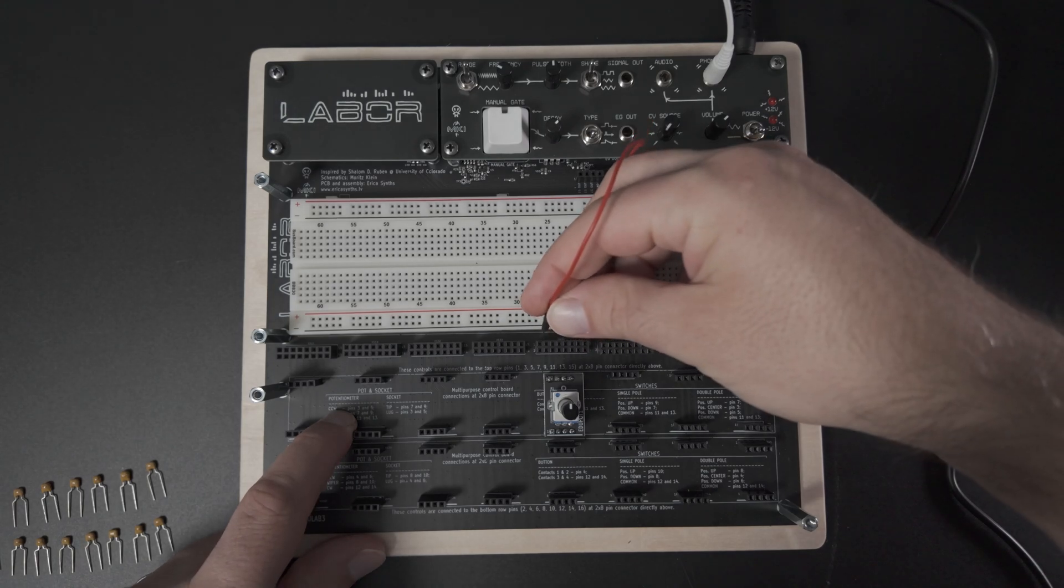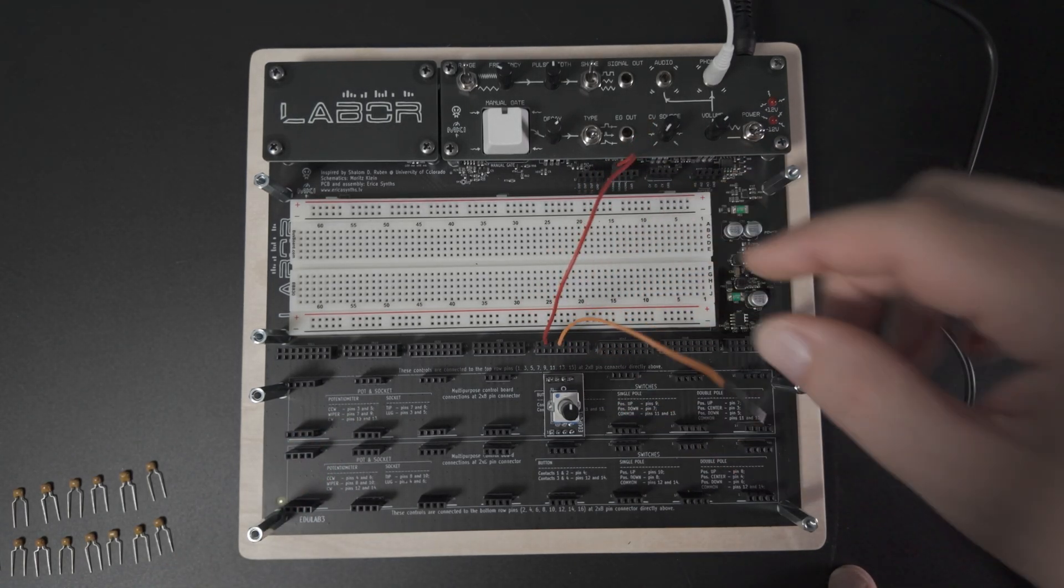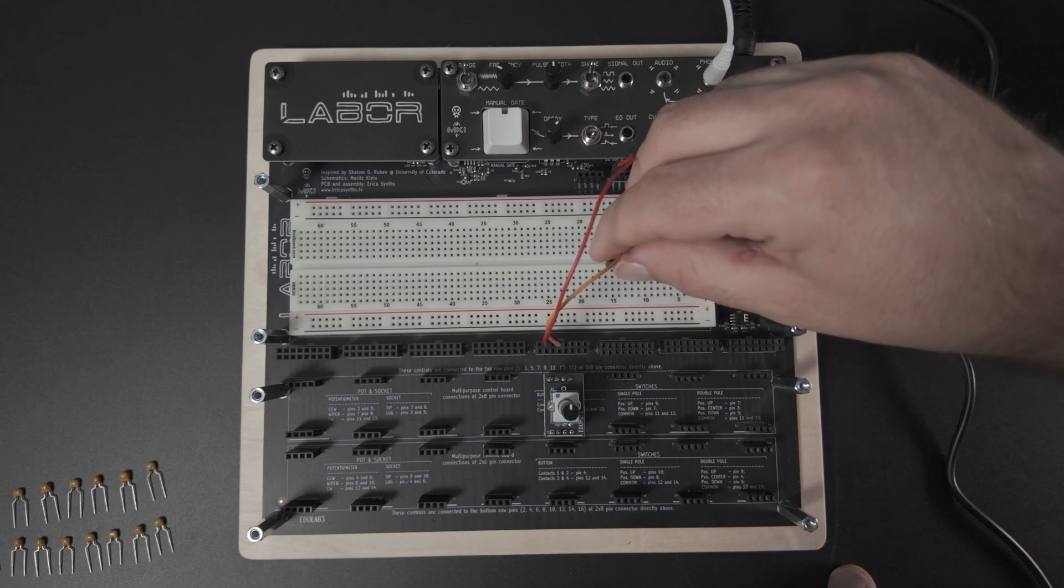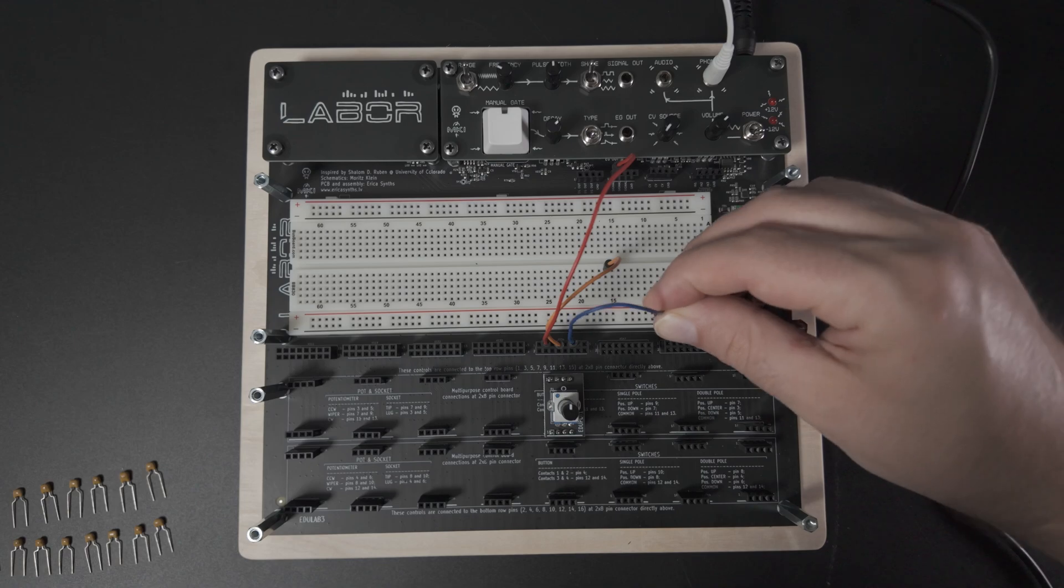We connect counterclockwise to the input signal from the oscillator. Then we connect the wiper to a point on the breadboard. We don't go directly to the amp because we still need to hook the capacitor in between, and we connect clockwise to ground.